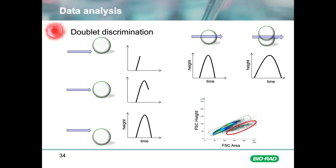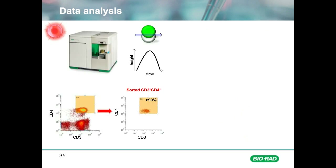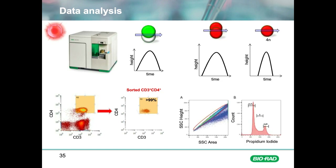Removal of doublets is particularly important in cell sorting, as the cytometer cannot distinguish between a doublet and a singlet for the fluorescent signal — doublets could reduce the purity of your sort by including negative cells. Another use is in cell cycle analysis, where it is important to distinguish between single cells with double the amount of DNA and doublets, as both show increased fluorescence when stained with a DNA dye such as propidium iodide. Using height or width versus area allows you to separate doublets from single cells containing 4n amounts of DNA — cells with 4n DNA have double the area and height values, whilst doublets will show similar height but increased area.